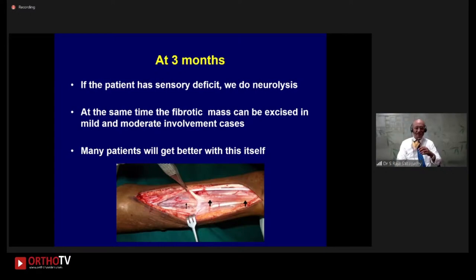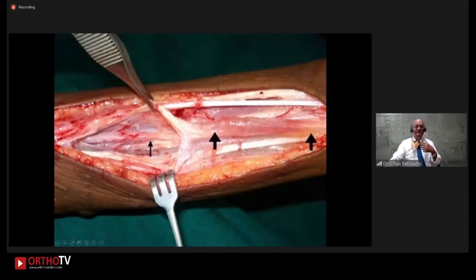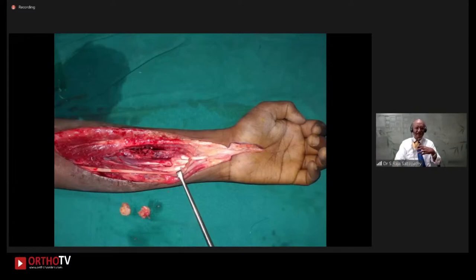The most important thing is we have to do a neurolysis. In Volkmann's ischemic contracture, we think of muscles, but the nerves are very important — muscles we can somehow address, but sensation you can only get through the nerves. If the patient has a sensory deficit, we do a neurolysis and excise the fibrotic mass. Here you can see that's the nerve, and there's severe fibrosis in this area. At one point the nerve is thick, but because of the constriction it starts thinning dramatically. You really need to take off all the fibrosis and free the nerves so the muscle can breathe easy.